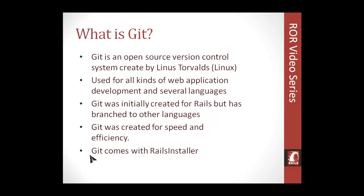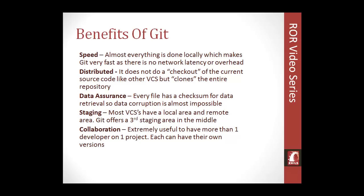Git comes with the Rails installer, which we already installed a couple of sections ago, so you already have it on your machine if you've been following along. One of the key benefits of Git is speed — since everything is local there's no network latency or overhead, and there's no uploading or downloading except when you push and pull, which is done in a single command.